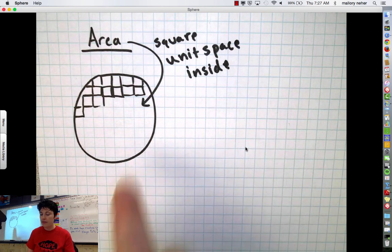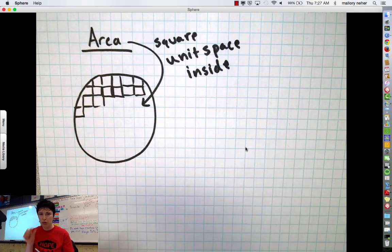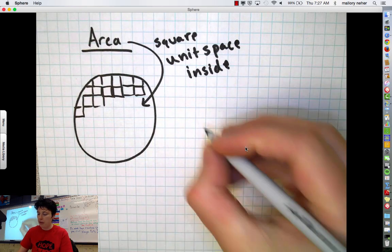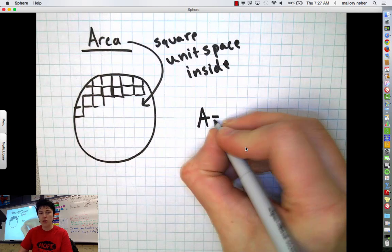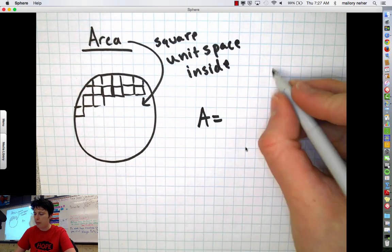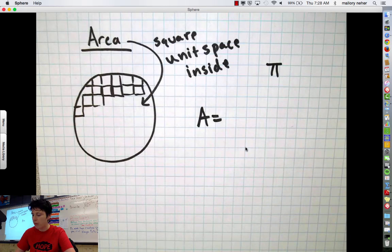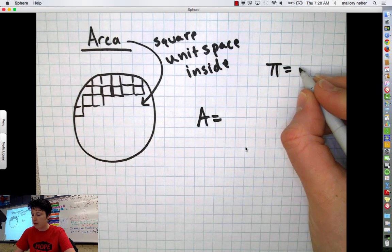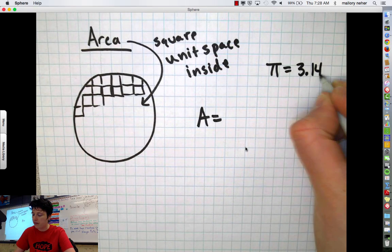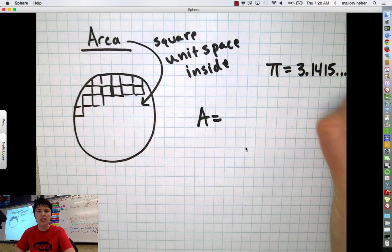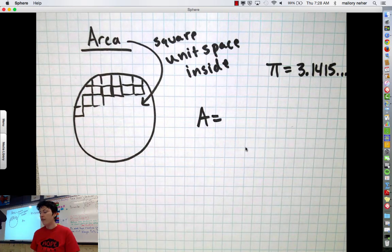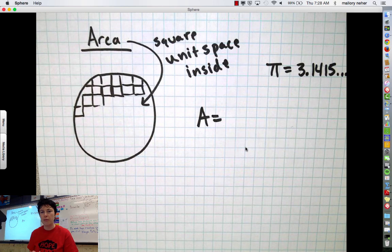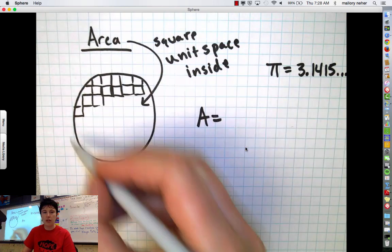So what we do instead of doing this strategy of drawing little tiny squares is we use a formula. And really simply put, circles are always these interesting things. It always comes down to the number pi. Pi is 3.14. Remember it's like 3.1415 on and on and on. It's this decimal that never ends. For some reason this weird little number, this 3.14 number always has a relationship to this circle.